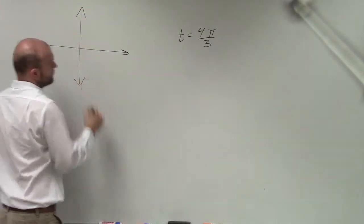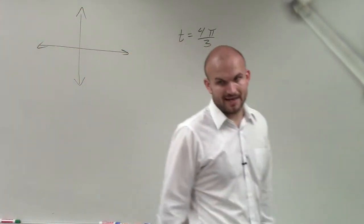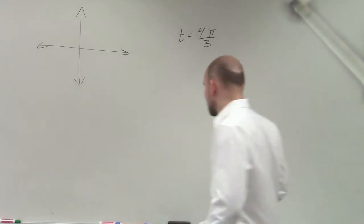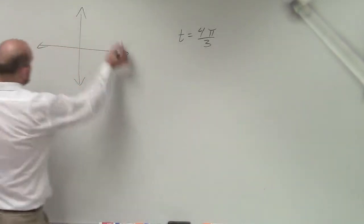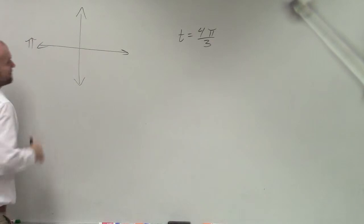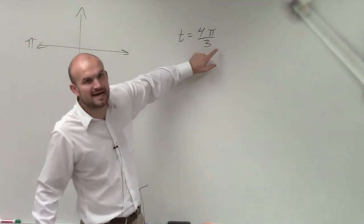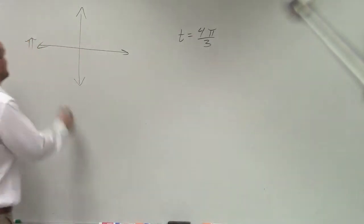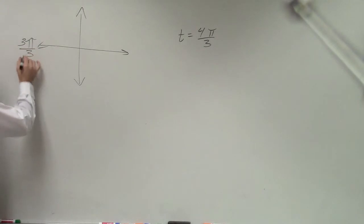In our first section, we practice drawing the angle. So we need to have 4π over 3. The first thing I do is I know that halfway around my quadrant is π. Since my denominator is in thirds, that means this is the same thing as 3π over 3.